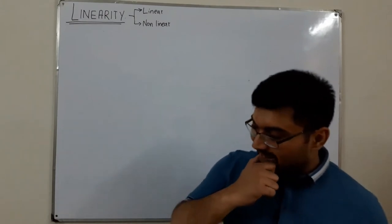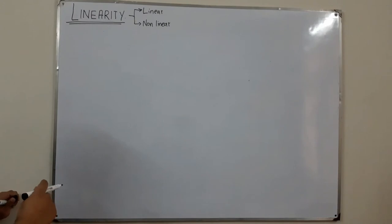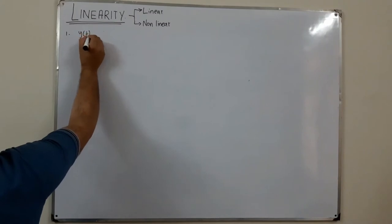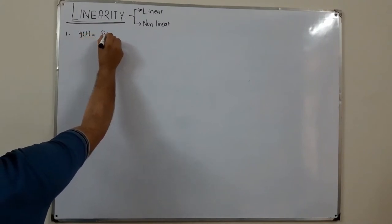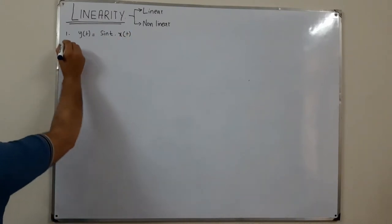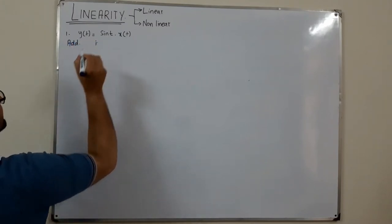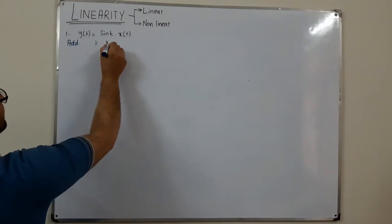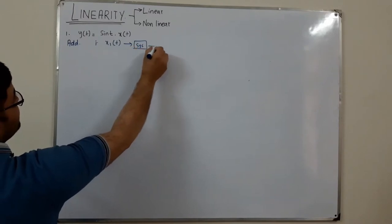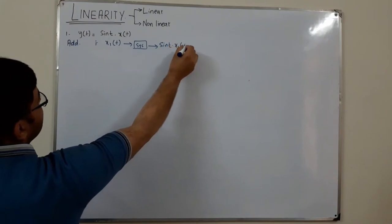Bismillahirrahmanirrahim, Assalamu Alaikum. Kalar Khan here with more examples. Example one: y(t) = sin(t)·x(t). Checking additivity — the first step: provide input x1(t) to the system, and the output is sin(t)·x1(t). Sine is the coefficient; whatever input you give, the system multiplies it with that coefficient.